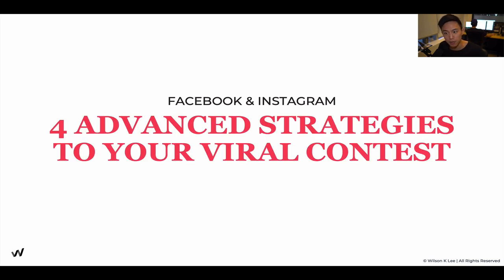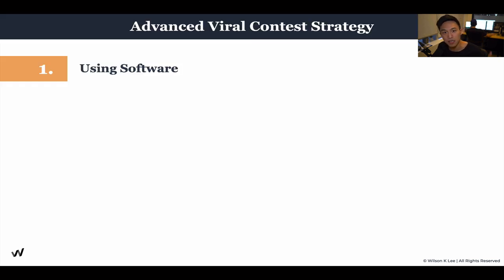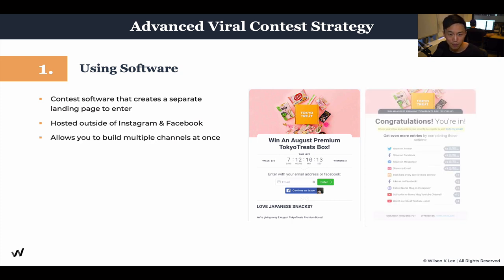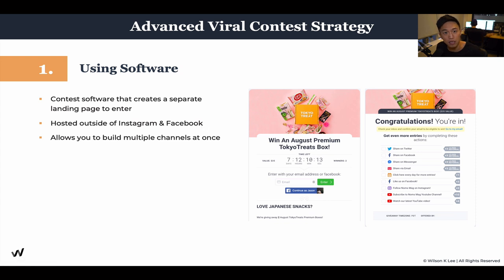Today we're talking about the four advanced strategies to uplift your viral contest. First up is to use software. It is to use software to amplify the message so that you can grow multiple platforms at the same time. Usually these softwares are hosted outside of Instagram and Facebook, meaning they're not integrated within the platform. You need to install other programs to actually activate these kinds of items.